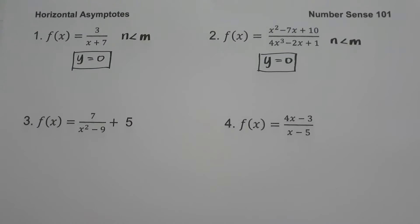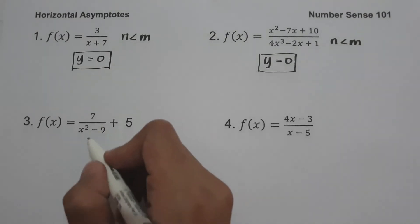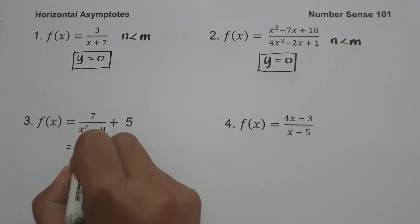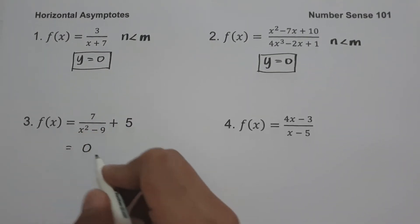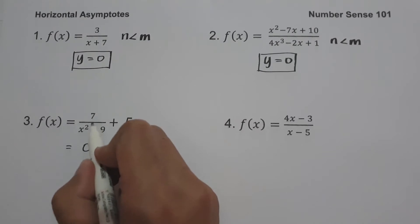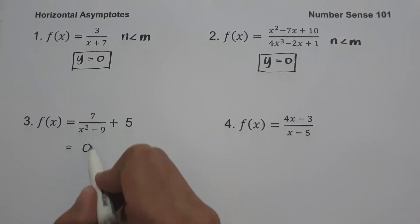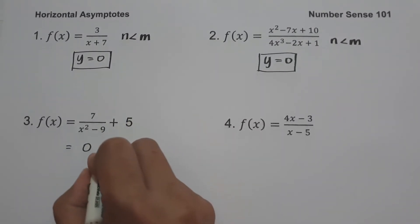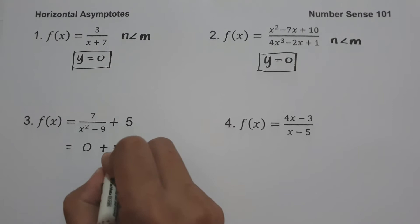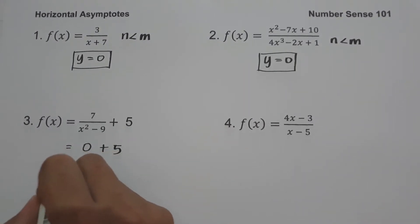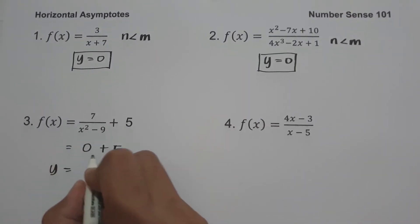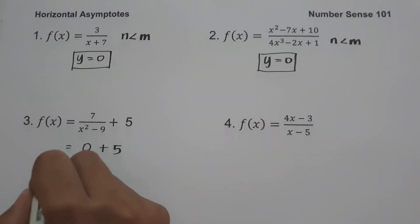On number three, we have f(x) equals 7 over (x squared minus 9), plus 5. The rational part has a horizontal asymptote of zero because the degree of the numerator is less than the degree of the denominator. Then we add 5, so our horizontal asymptote is y equals zero plus 5, which is 5.